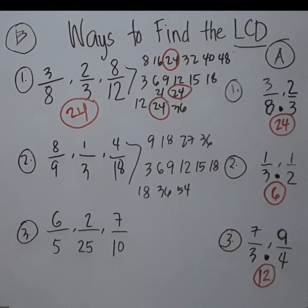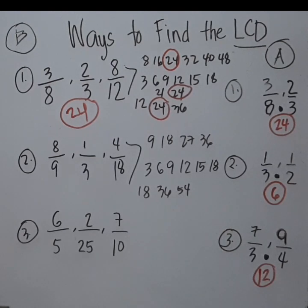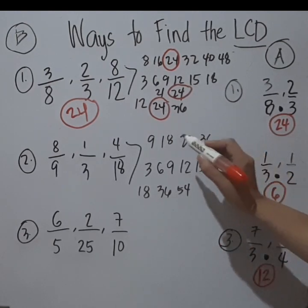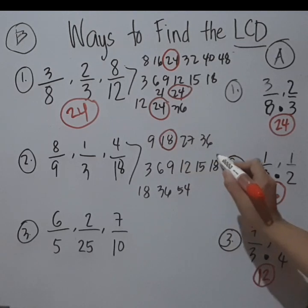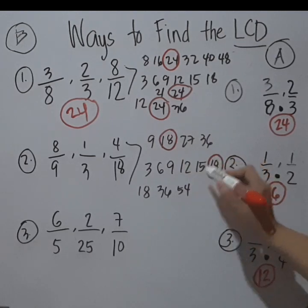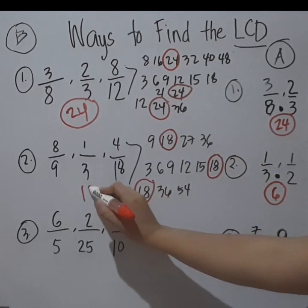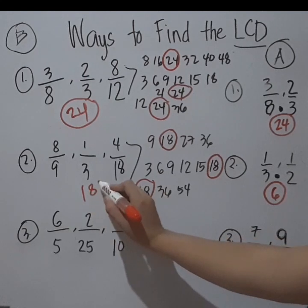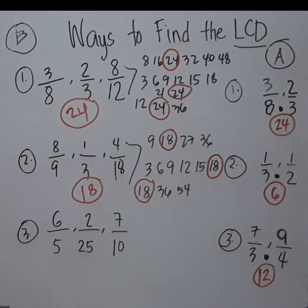Again, you can stop once you see they have a common number. Here, 18 is the common number among them — meaning 18 is the least common denominator for this set. And then for the last number, we have 5, 25, and 10.